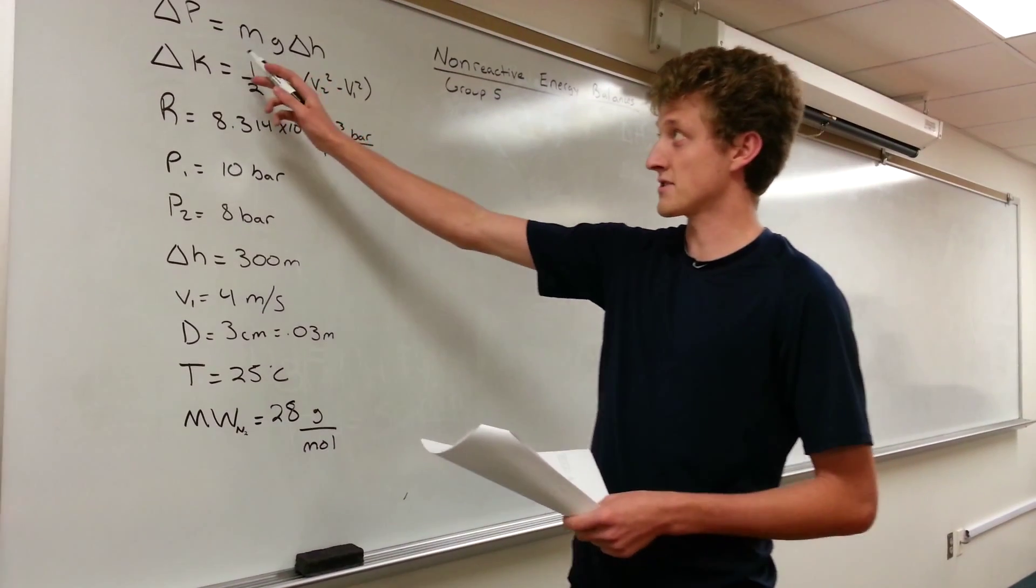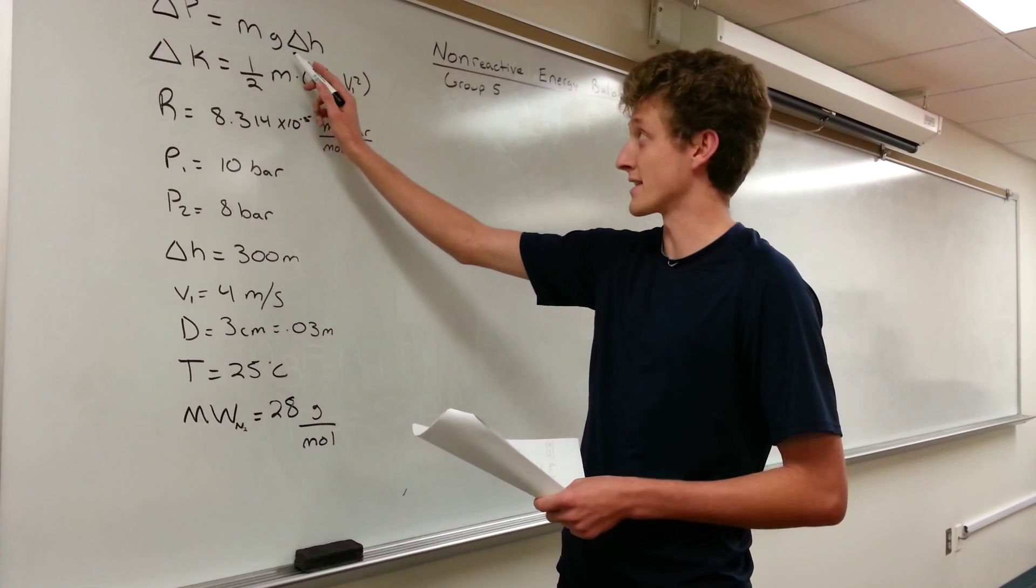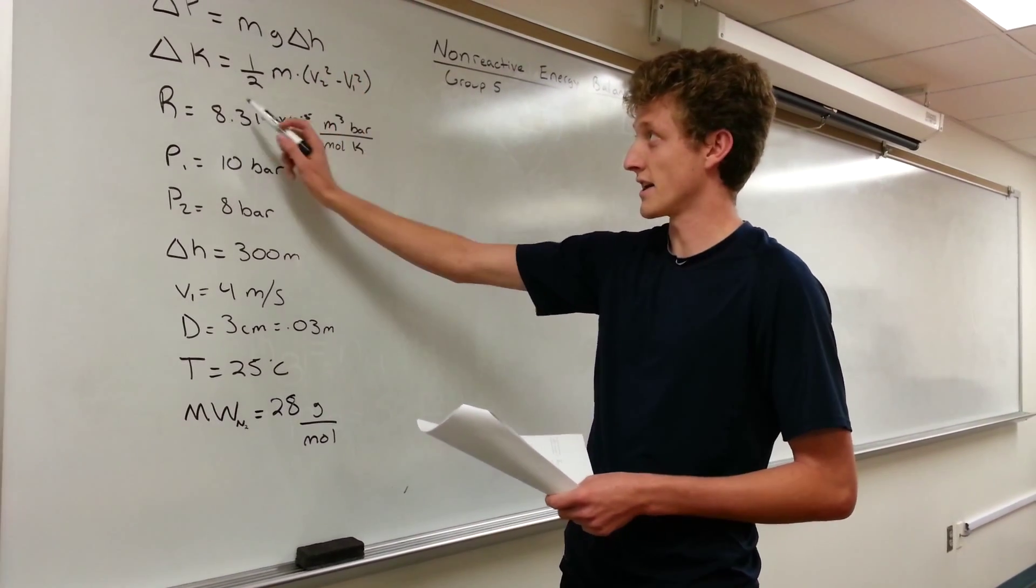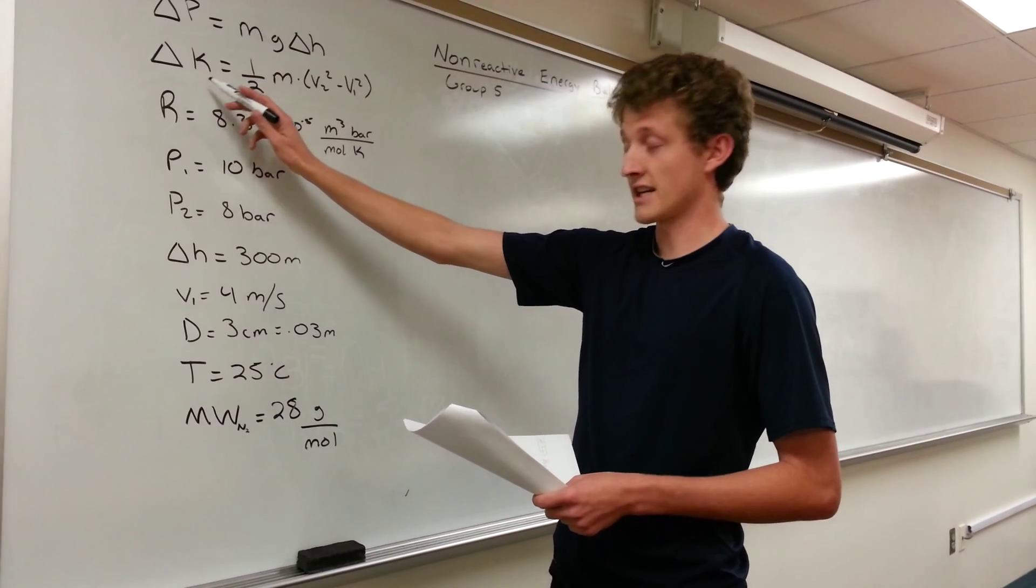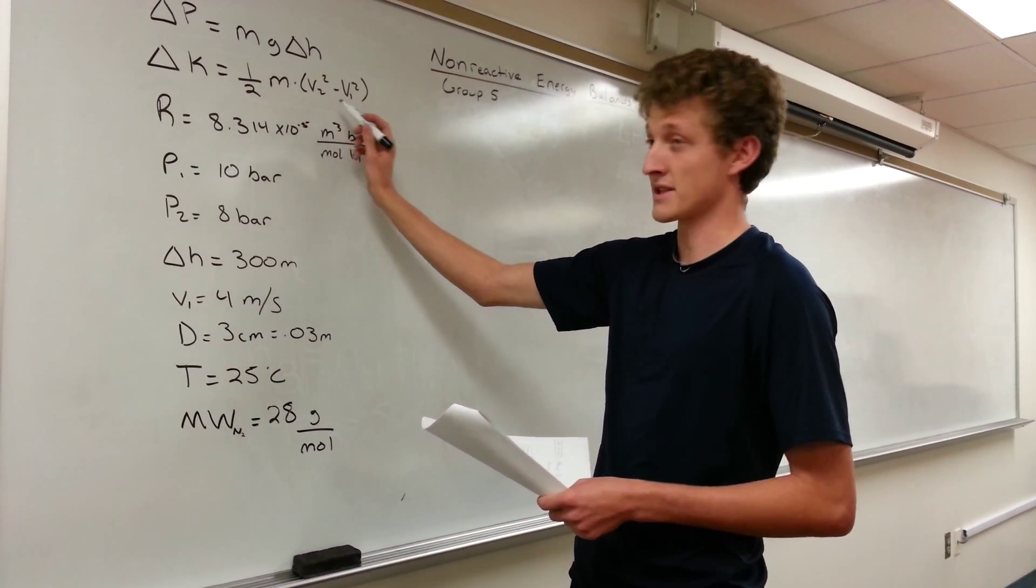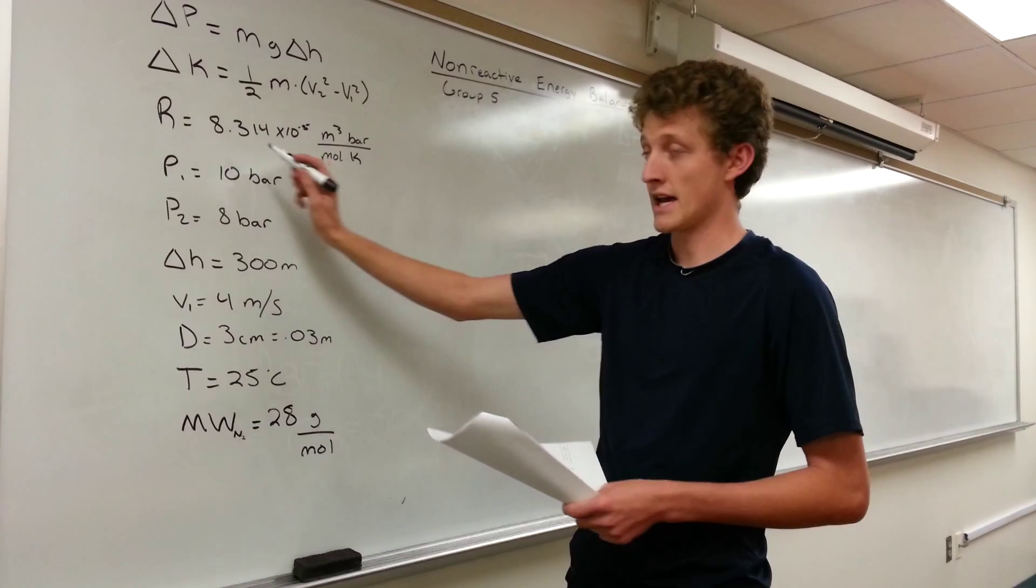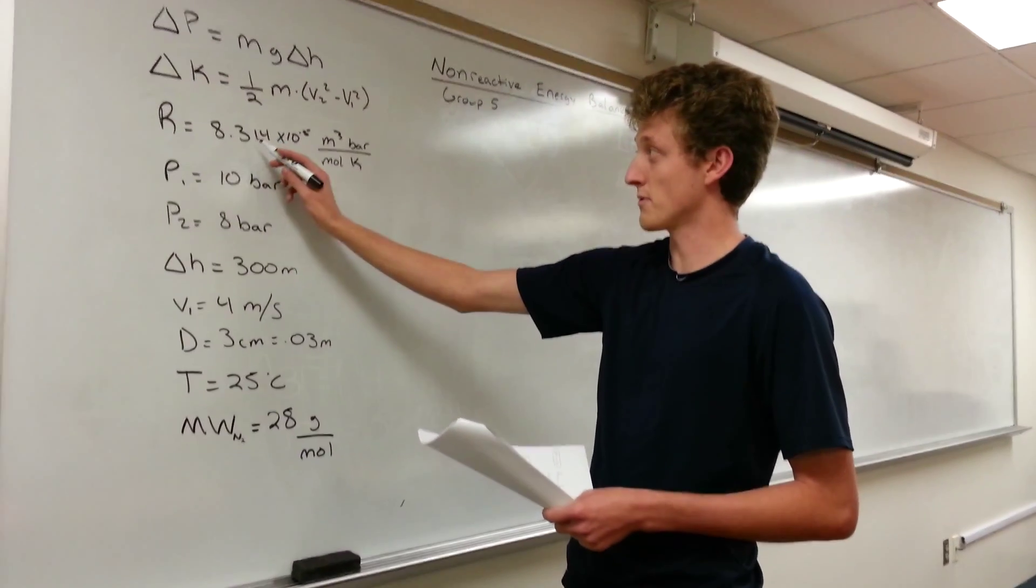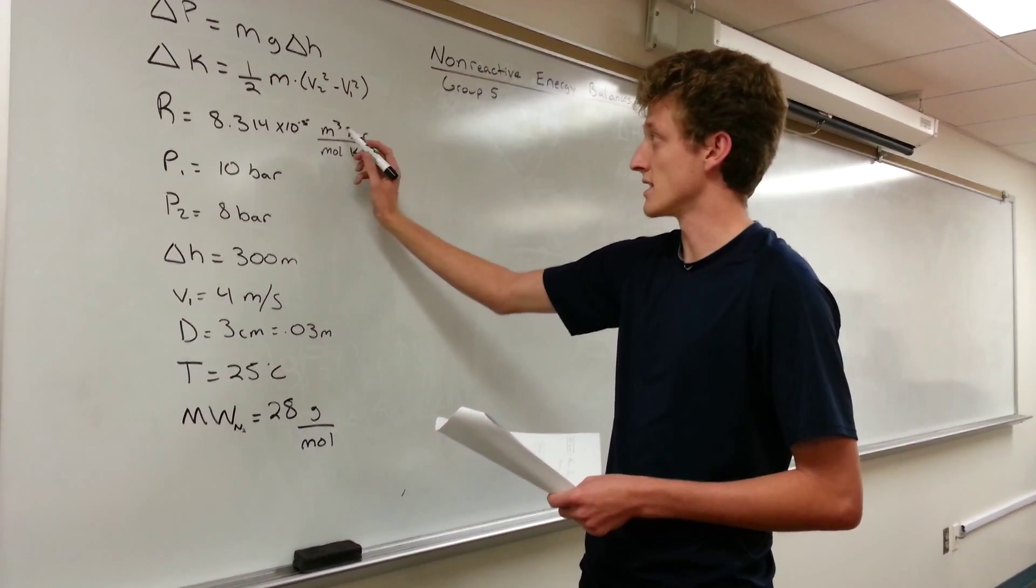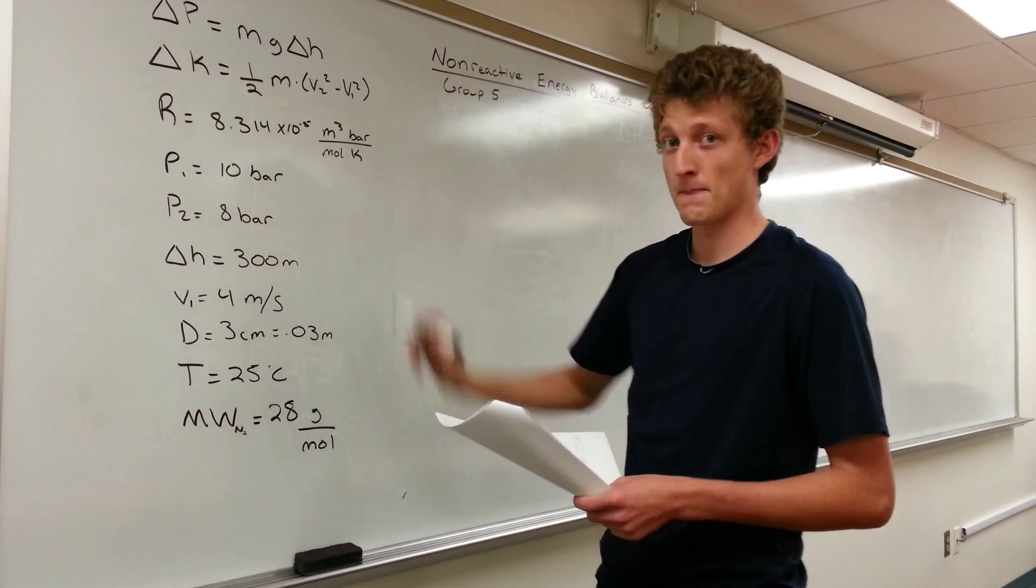The change in potential energy equals mass times the acceleration due to gravity times the change in height. The change in kinetic energy is one half the mass times the change in velocity squared. The R constant will be 8.314 times 10 to the negative 5 meters cubed bar per mole Kelvin.